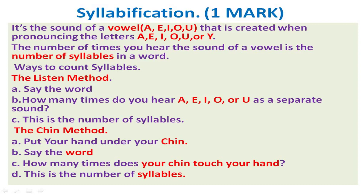The first one is the Listen Method. Say the word, and count how many times you hear A, E, I, O, U as a separate sound. That count is the number of syllables.